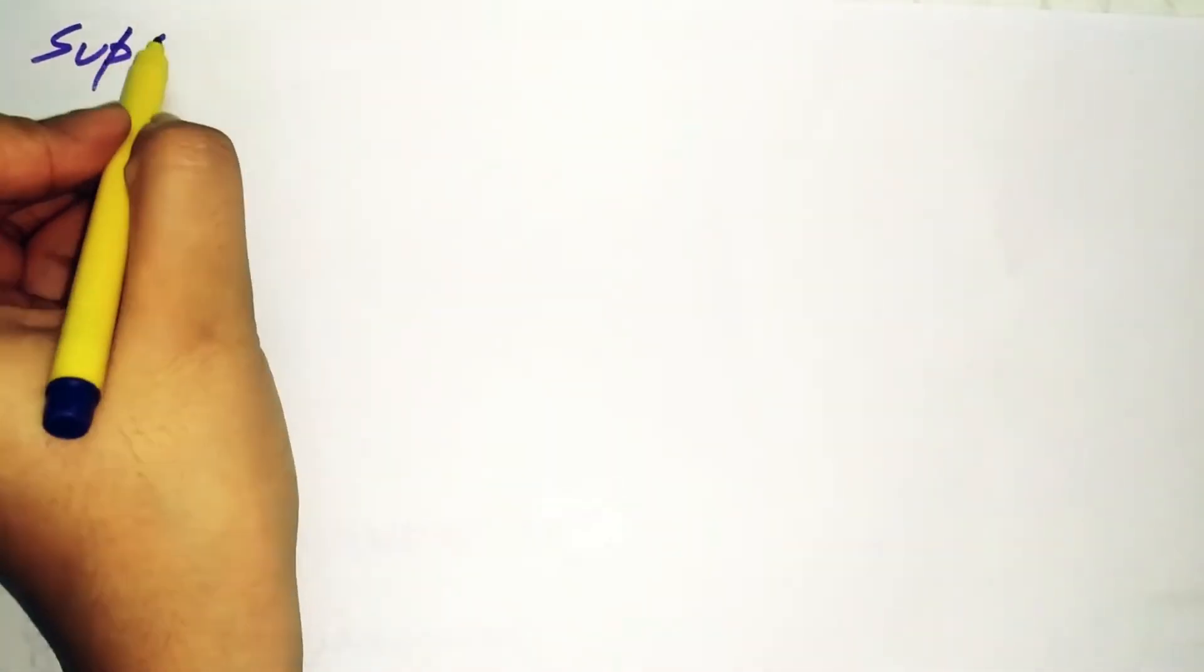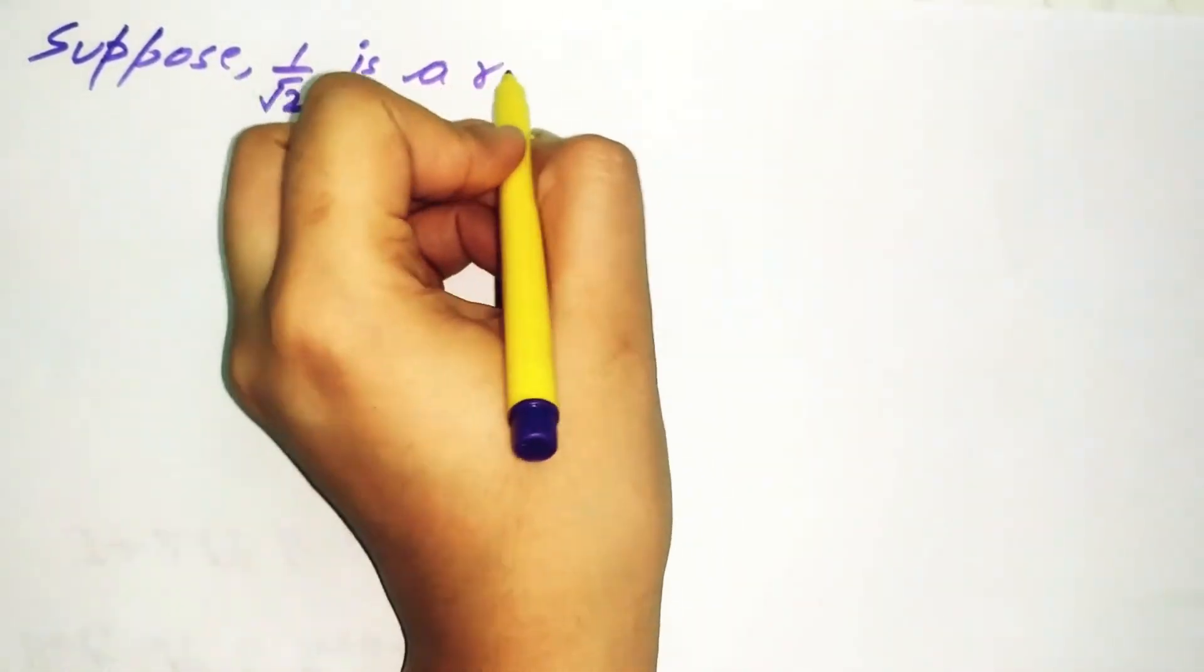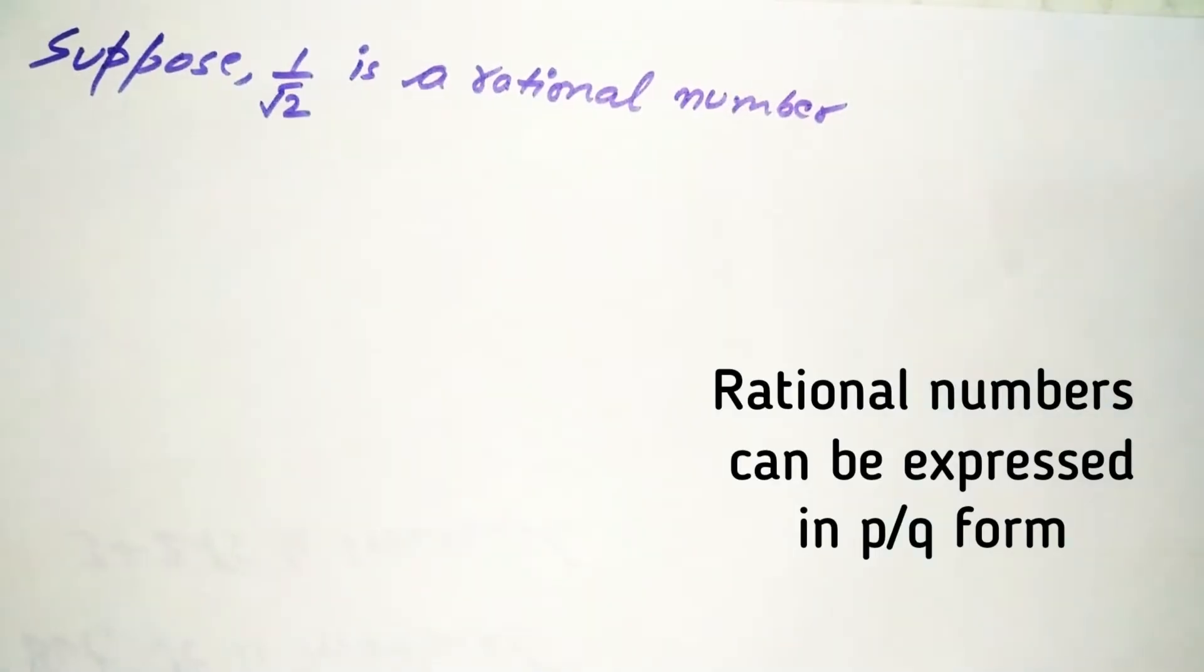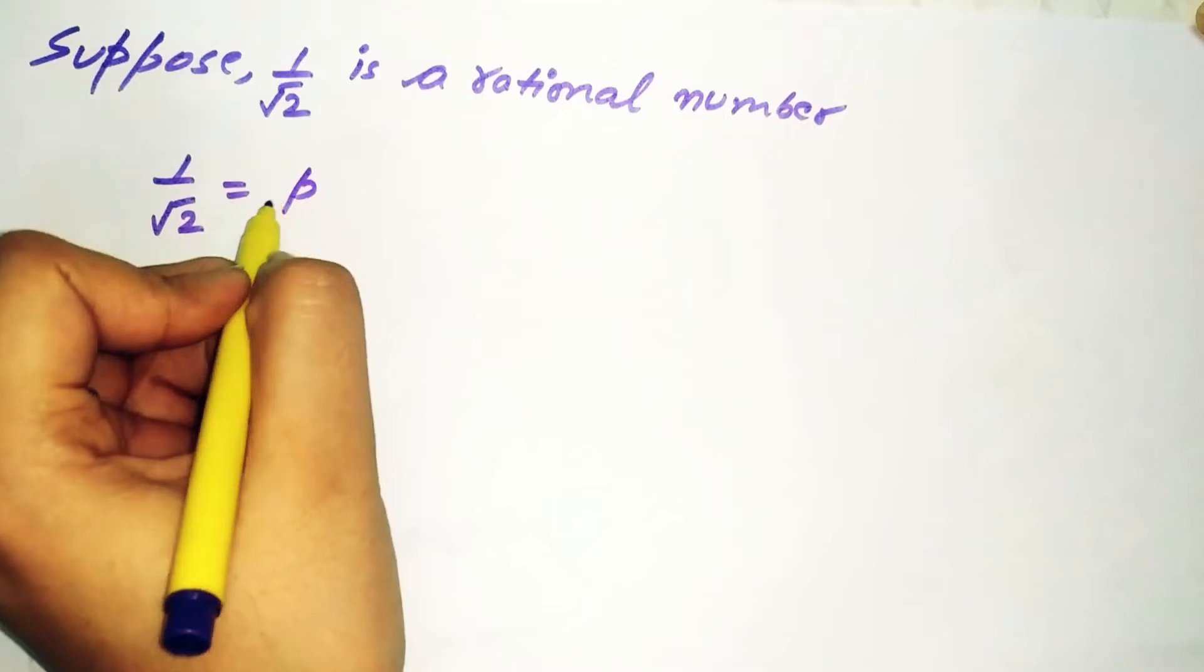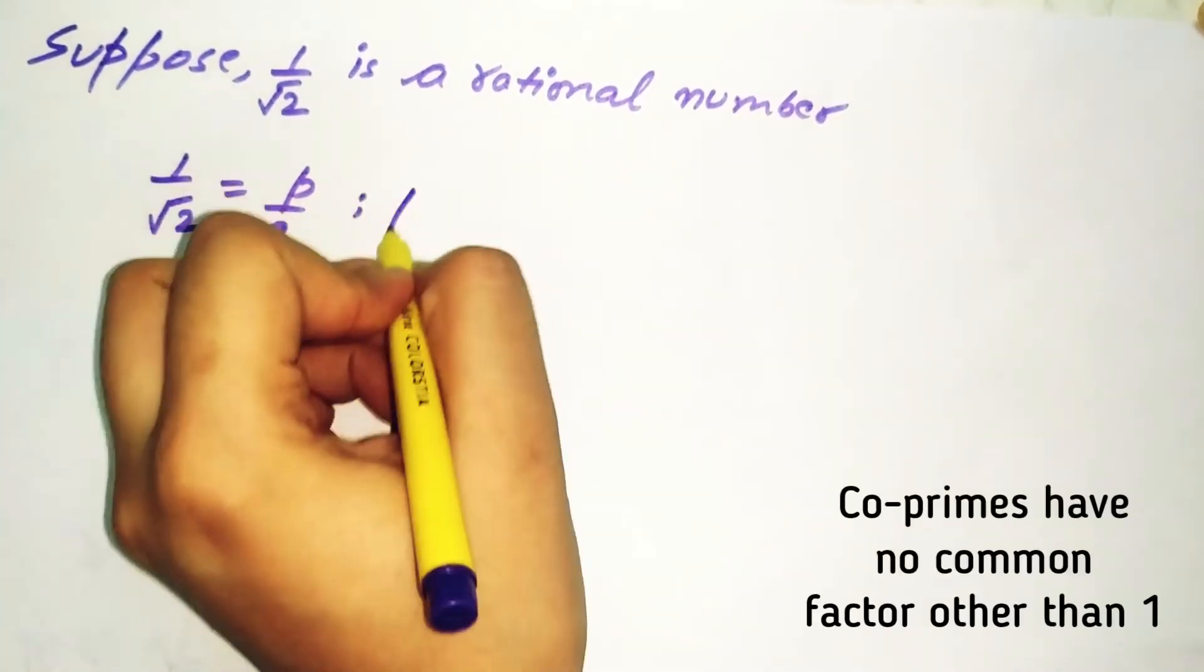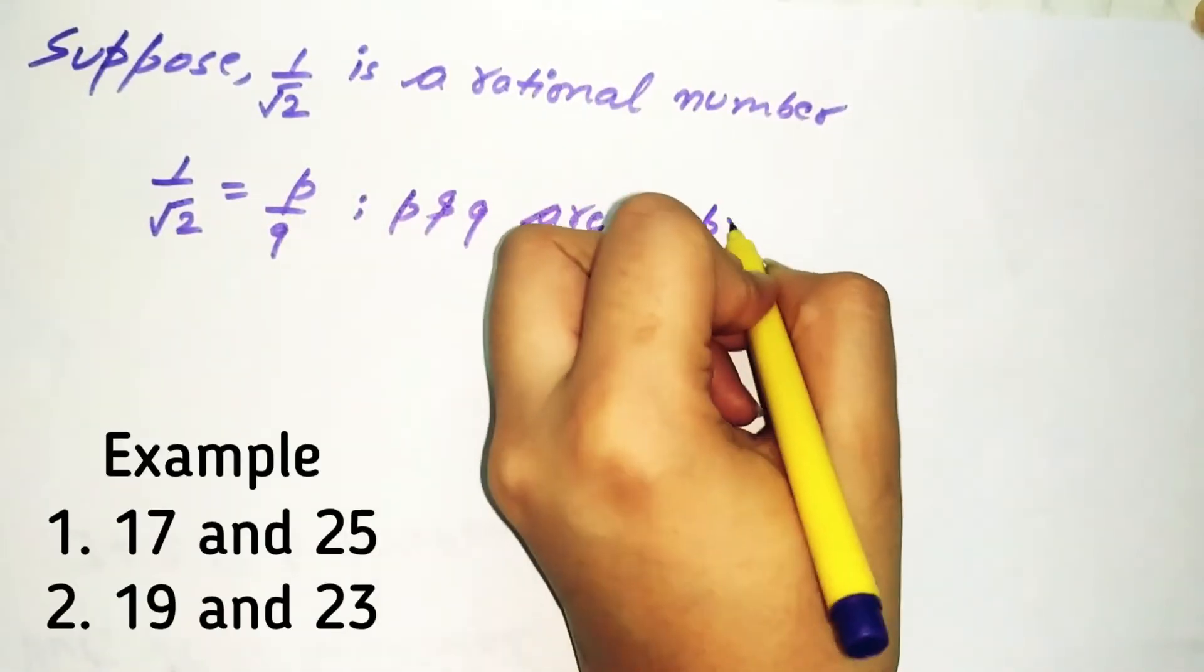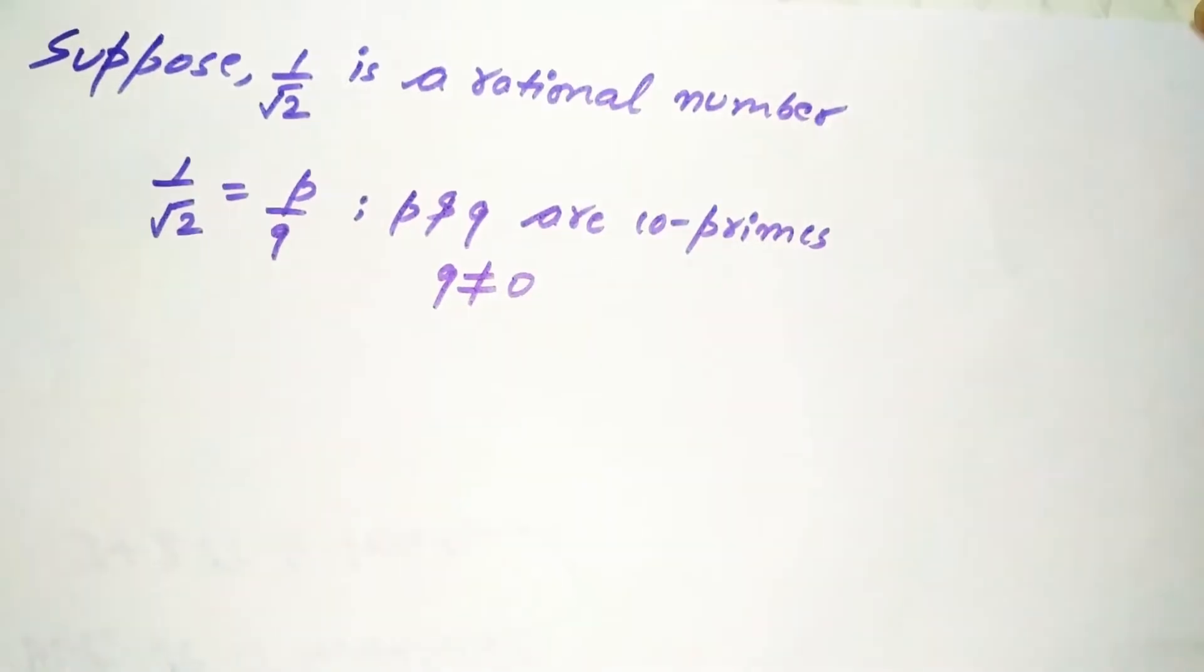Our first assumption: suppose 1 by root 2 is a rational number. So it can be expressed in P by Q form, where P and Q are co-primes and Q is not equal to 0.